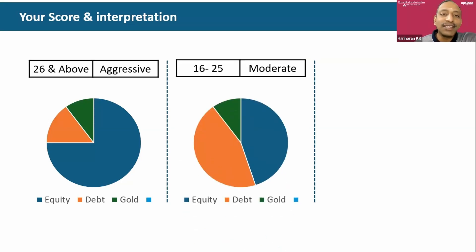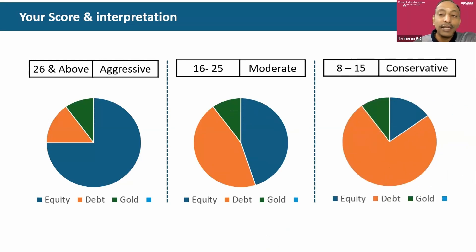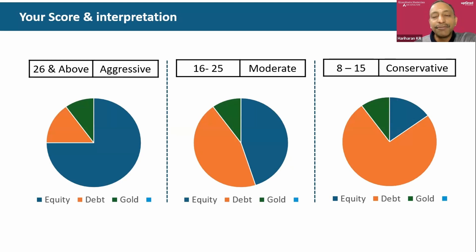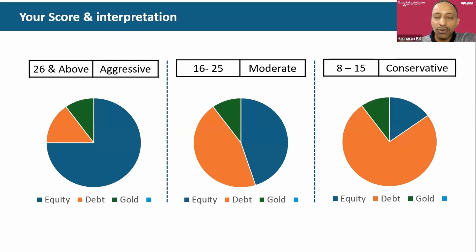If you are a moderate investor, you still need all three asset classes but the mix is different — 45% equity, 45% debt, and 10% gold. If you are a conservative investor, the equation changes — it just flips compared to aggressive: 75% becomes debt, 15% becomes equity, and 10% becomes gold.